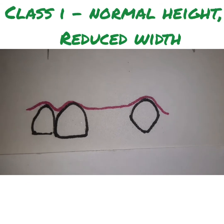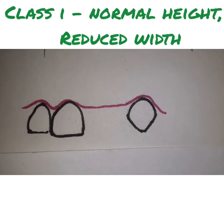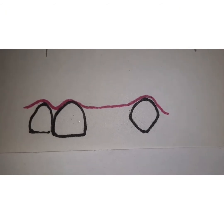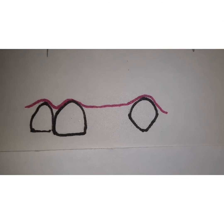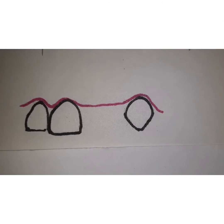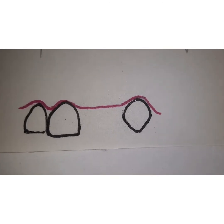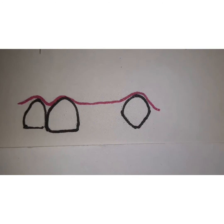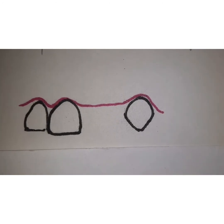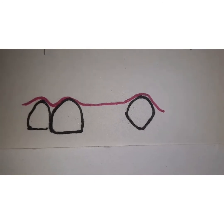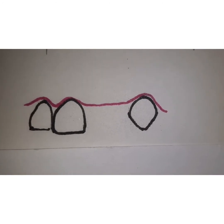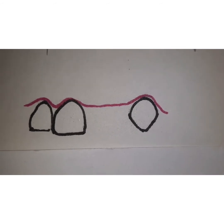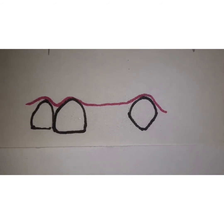Class 1 of Seibert's classification denotes a residual ridge which has a normal ridge height but has a loss of faciolingual ridge width. So there is essentially loss of the width of the residual ridge, but the height is normal.